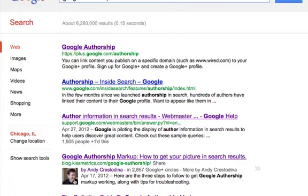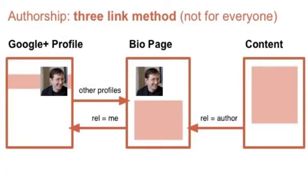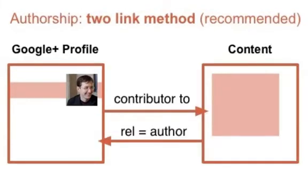There are actually three methods for getting Google Authorship to work. The first is verifying your email address and making sure it appears on the post you've written — this tends not to work, I don't recommend it. There's another method called the three-link method, which is also kind of problematic and seems more suitable for large blog sites with lots of contributing authors. So we're going to focus on the two-link method, which is the easiest, and I'm going to show you how to set that up now.